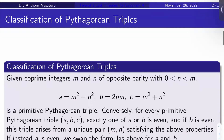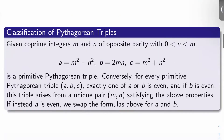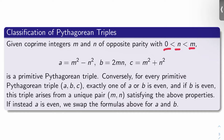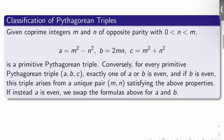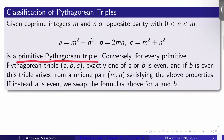Here's the classification of Pythagorean triples that you learn in your number theory class. Given co-prime integers m and n of opposite parity, with 0 < n < m, the quantities a = m² - n², b = 2mn, and c = m² + n² constitute a primitive Pythagorean triple.